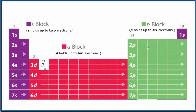To write the configuration, we'll follow the pattern on the periodic table. We'll start in the first energy level: 1s², so that's full. Second energy level: 2s². We go over to p — 2p1, 2, 3, 4, 5, 6 — because p can hold up to 6, so that's full.